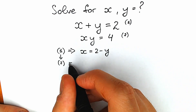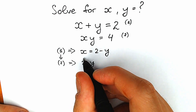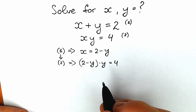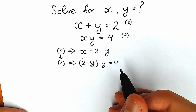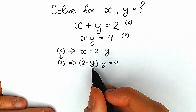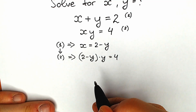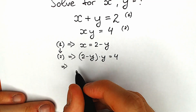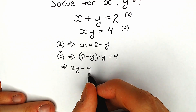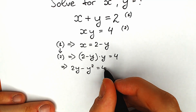So our expression is (2 minus y) times y equals 4. Let's simplify this. We have only one variable, so we can find y. We get 2y minus y squared equals 4.